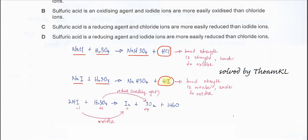But for HI, the bond strength is weaker. This means it's easier to break and therefore iodide is easier to be oxidized by H2SO4.